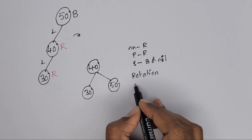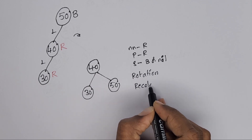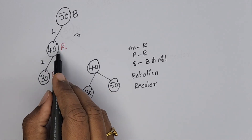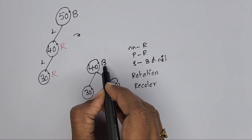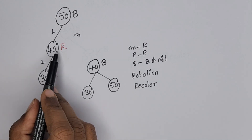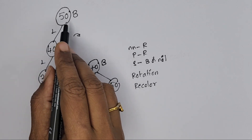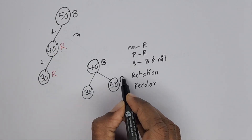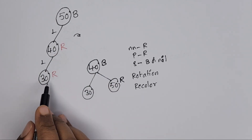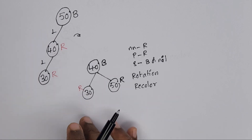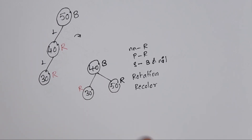After rotation, we recolor. The parent of 30 is now 40, whose color is red — make it black. The grandparent 50's color is black — make it red. Node 30's color does not need to change; it stays red. Now there is no red-red conflict. These are the two different cases in insertion.